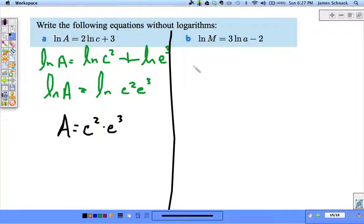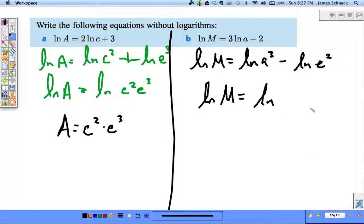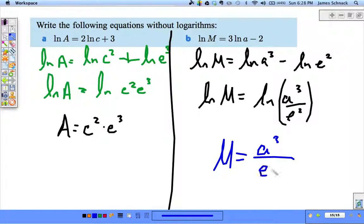Next one. Natural log of M equals natural log of a^3 minus natural log of e^2. Natural log of e^2 is 2. Now we combine the right side: natural log of M is equal to the natural log of a^3 over e^2. And now we have log equal log. The logs undo each other, they go away. We are left with M equals a^3 over e^2.